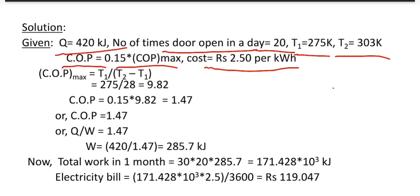We know the maximum COP is equal to T1 divided by (T2 minus T1). In this way we get the maximum COP of 9.82. So the operating COP of this refrigerator is equal to 0.15 multiplied by 9.82, which is equal to 1.47.